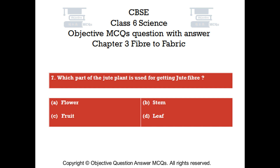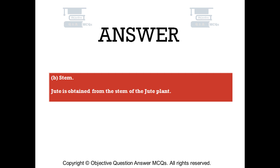Question number 7. Which part of the jute plant is used for getting jute fiber? Option A: flower. Option B: stem. Option C: fruit. Option D: leaf. The right answer is option B — stem. Jute is obtained from the stem of the jute plant.